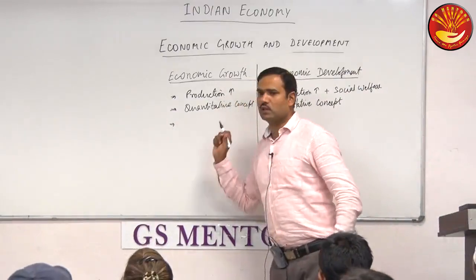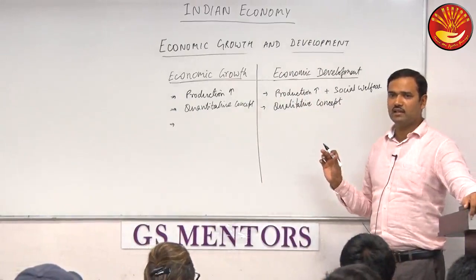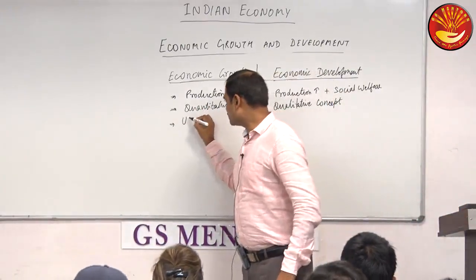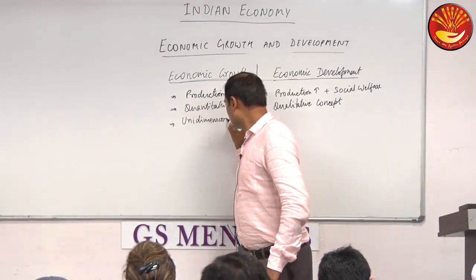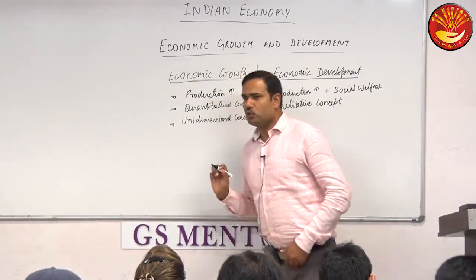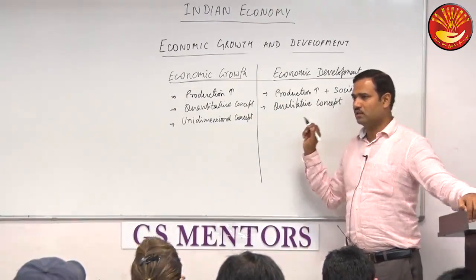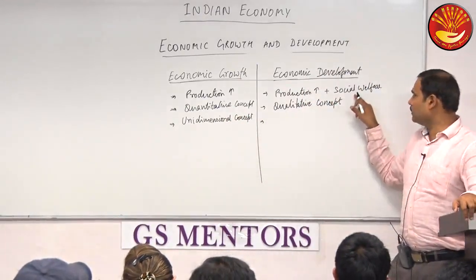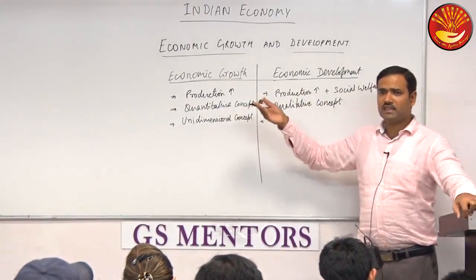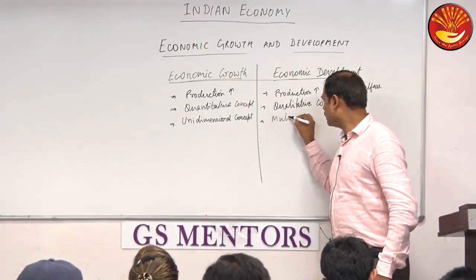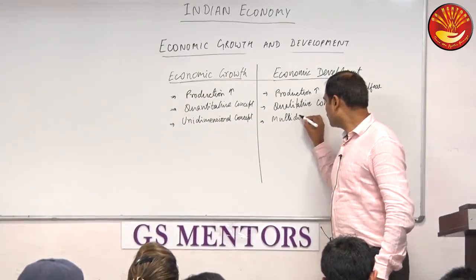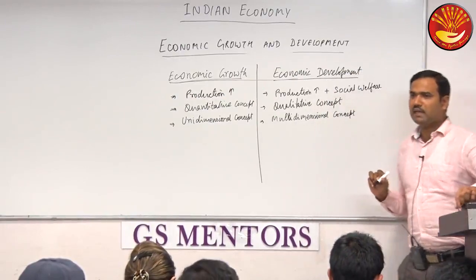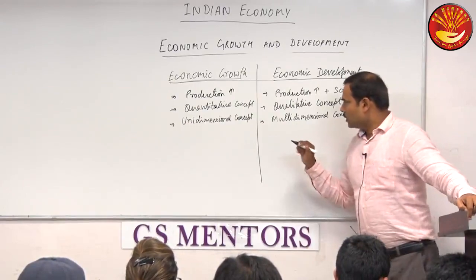Apart from that, how many dimensions are there in economic growth? One only — one dimension, one aspect, that is production only, production of goods and services. So it is a unidimensional concept. How many dimensions are there in economic development? Many — because social welfare depends on a lot of factors like poverty, unemployment, average income of people, basic amenities, even clean environment. So it is a multidimensional concept with various dimensions.